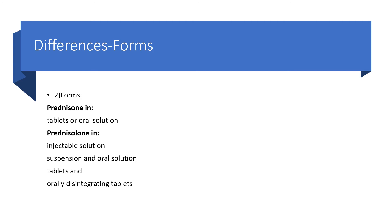Still on differences, when it comes to forms: prednisone is available in the form of tablet or oral solution only. While prednisolone could come in injectable forms, suspension for injection, oral solution, and even orally disintegrating tablets — that is, orally dissolving tablets. So prednisolone could be given by IV injection, tablet, or disintegrating tablet, while prednisone could only be in the form of tablets and oral solution.